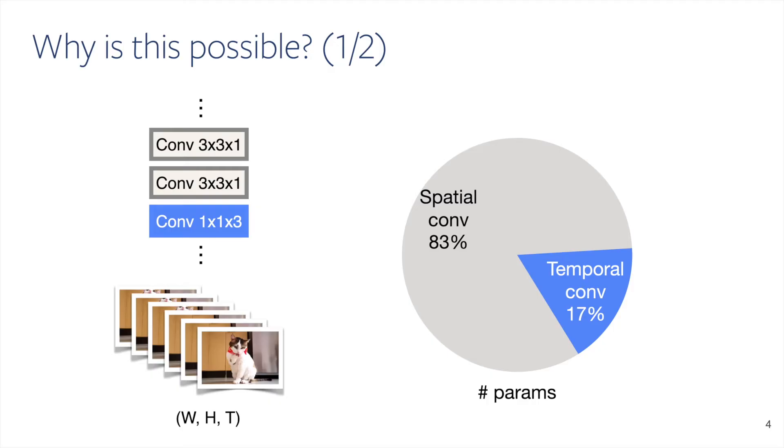First, with a modern 3D CNN video model design, the temporal components typically only use a small amount of extra parameters compared to an image model. This suggests opportunities to use also just a small amount of extra computations to train such a model.